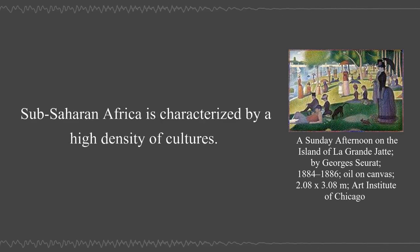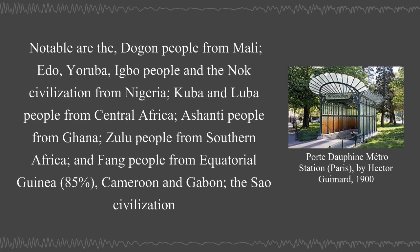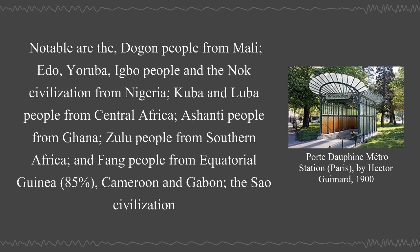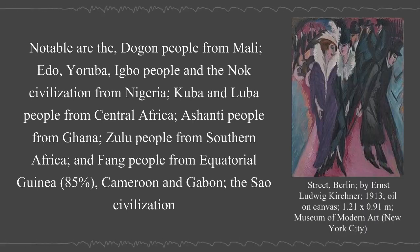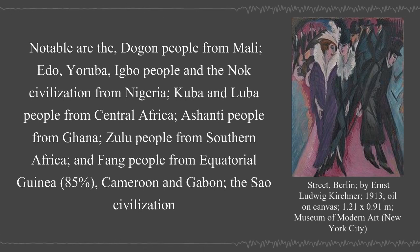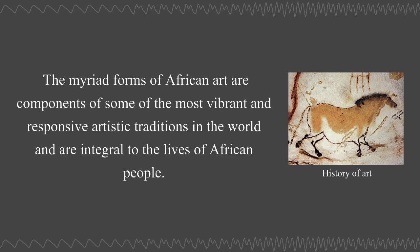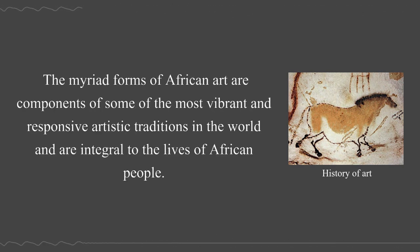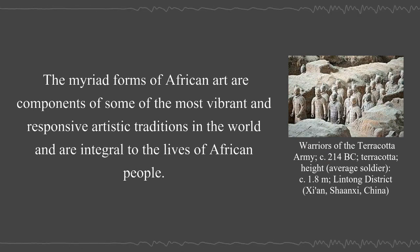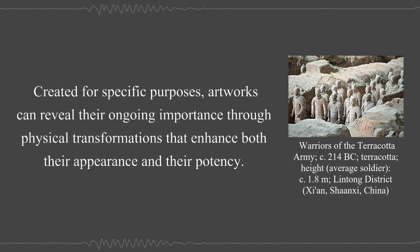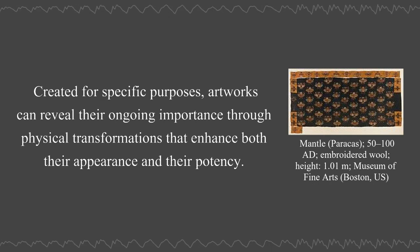Sub-Saharan Africa is characterized by a high density of cultures. Notable are the Dogon people from Mali, Edo, Yoruba, Igbo people, and the Nok civilization from Nigeria, Kuba and Luba people from Central Africa, Ashanti people from Ghana, Zulu people from Southern Africa, and Fang people from Equatorial Guinea, Cameroon and Gabon. The myriad forms of African art are components of some of the most vibrant and responsive artistic traditions in the world, integral to the lives of African people. Created for specific purposes, artworks can reveal their ongoing importance through physical transformations that enhance both their appearance and their potency.